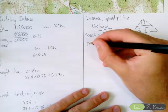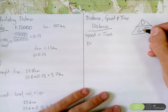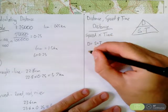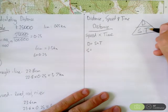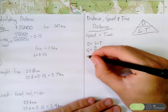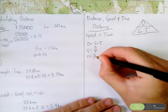So, through this, we know that D, distance, equals speed times time. S equals distance divided by time. T equals distance divided by speed.